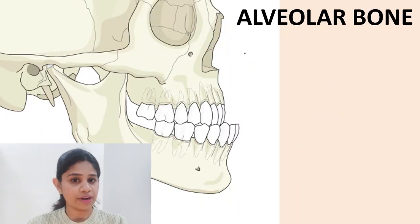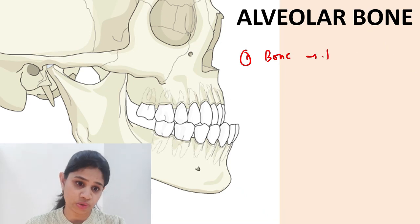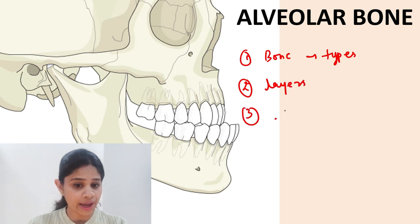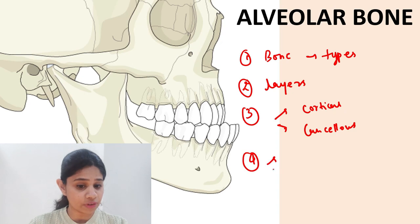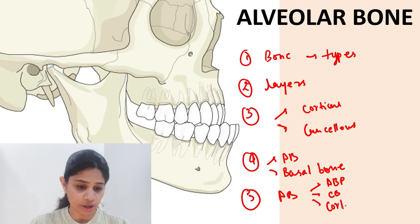To briefly summarize this Part 1 video: we discussed the various types of bones, stating that the maxilla and mandible are irregular bones. We saw the layers of bone and spoke in detail about cortical and cancellous bone. We then discussed the bone of the maxilla and mandible, comprising alveolar bone and basal bone, and how alveolar bone is further divided into three components: the alveolar bone proper, a layer of cancellous bone, and the outer and inner cortical plates.